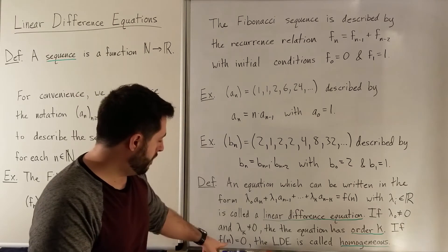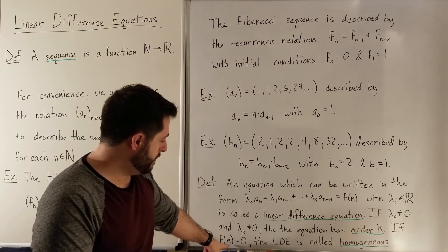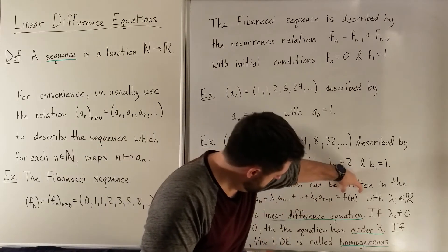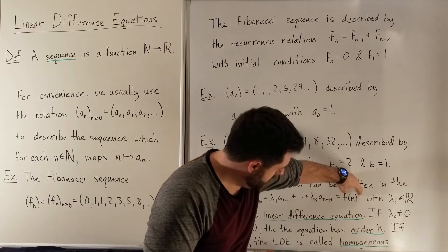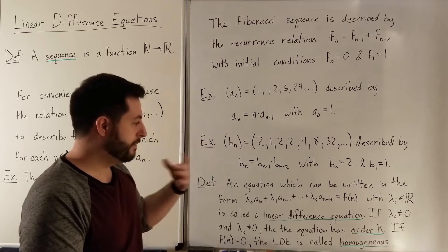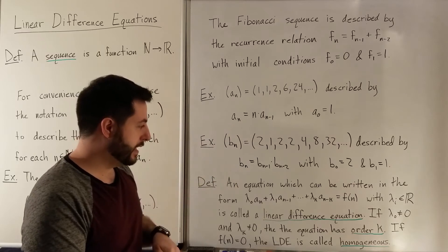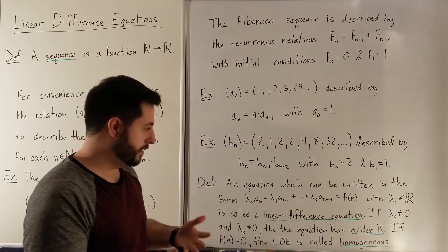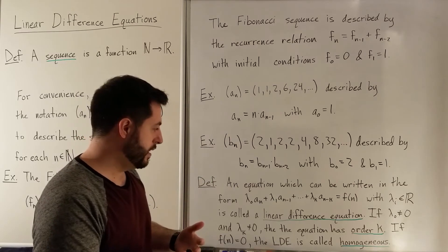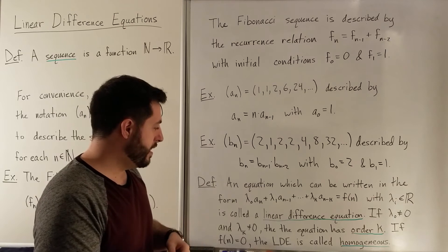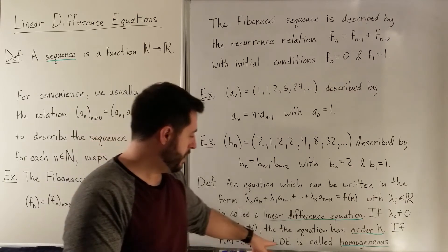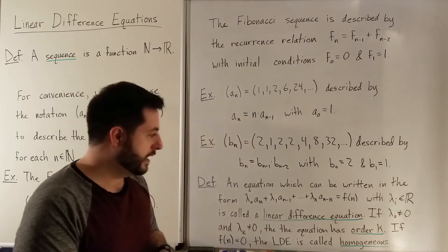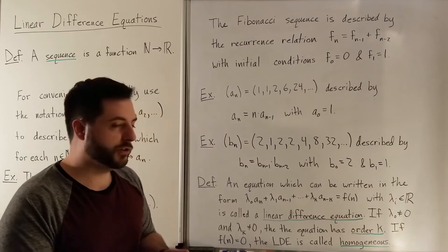Finally, if f(n) — the expression on the other side of the equation — is zero (just the zero function), then the linear difference equation, or LDE, is called homogeneous.